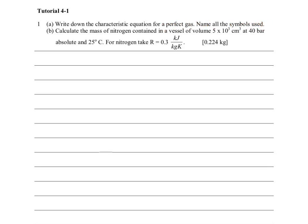Then, using that characteristic gas equation, calculate the mass of nitrogen, given its volume, given its pressure, given the temperature, and given the gas constant, specific gas constant R, at 0.3 kilojoules per kilogram K. So we write out the perfect gas equation first.